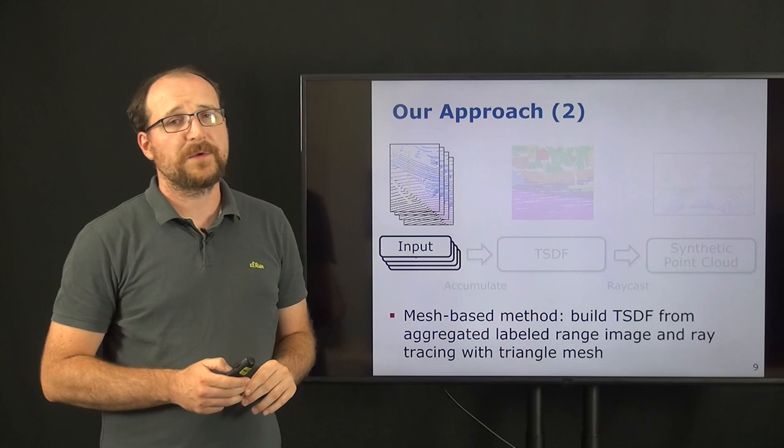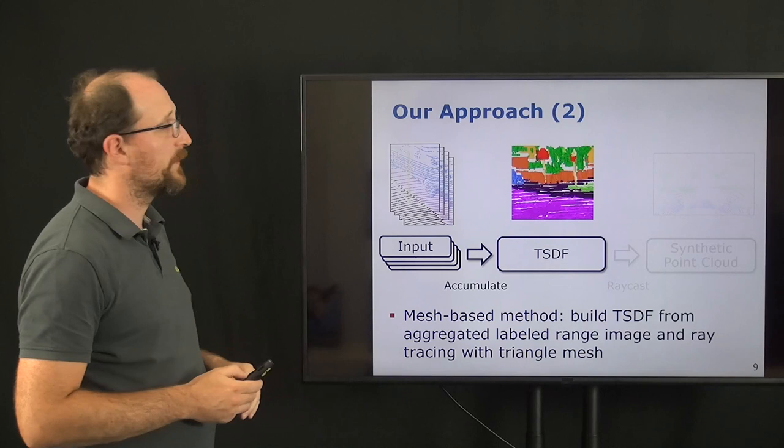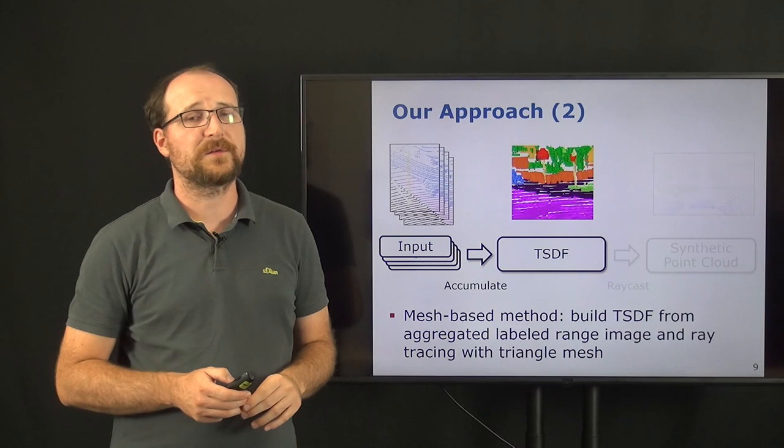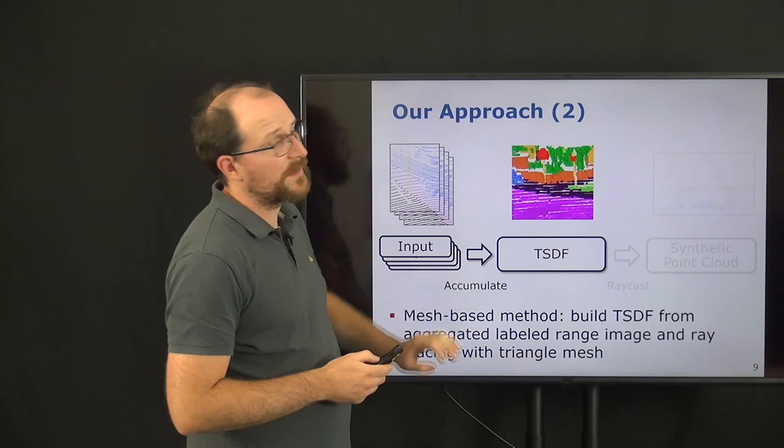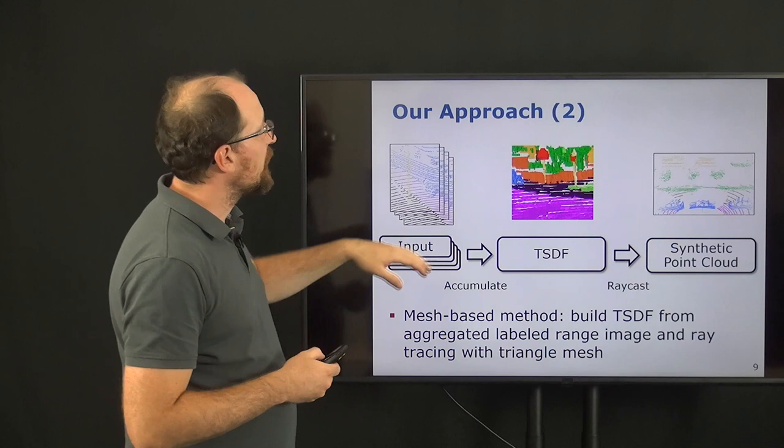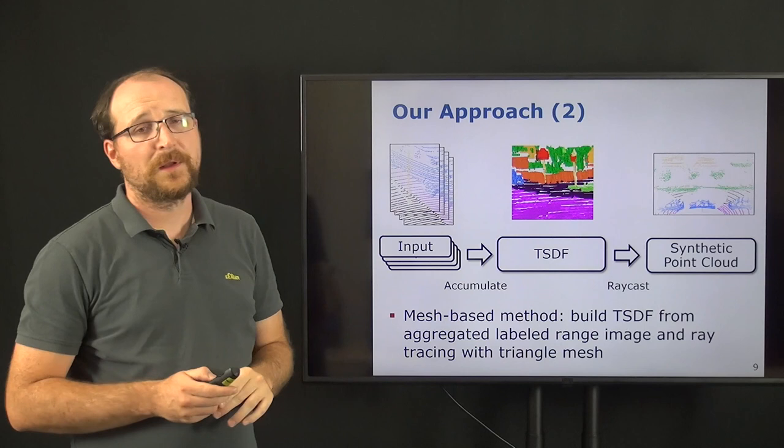We then can also use in our second approach a mesh-based approach, where we investigated here to use the sequence of point clouds to first generate a labeled range image. And using this, we can then generate a so-called truncated signed distance function, which provides us then with a labeled triangle mesh. And using this triangle mesh, we can then use again the ray casting, but now intersecting the rays with the triangle information to get then a synthetic point cloud.